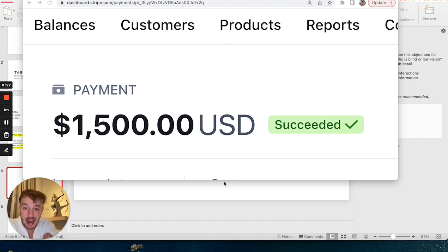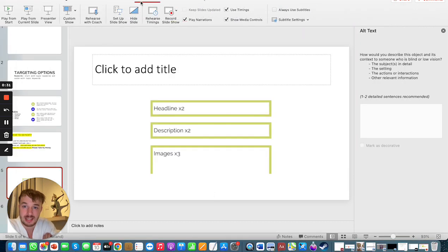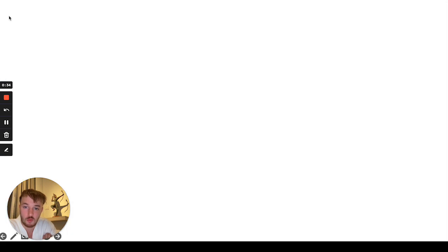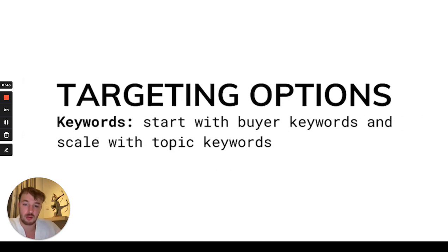Let me show you exactly how I did it. I prepared a slideshow and let's go from the beginning. We have different targeting options. On Google Ads, we have to start with buyers' keywords and scale with topic keywords.